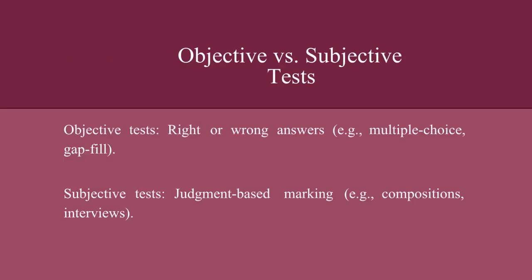Objective vs. Subjective tests: Objective tests have right or wrong answers, e.g., multiple-choice and gap fill. Subjective tests are judgment-based marking, e.g., compositions and interviews.